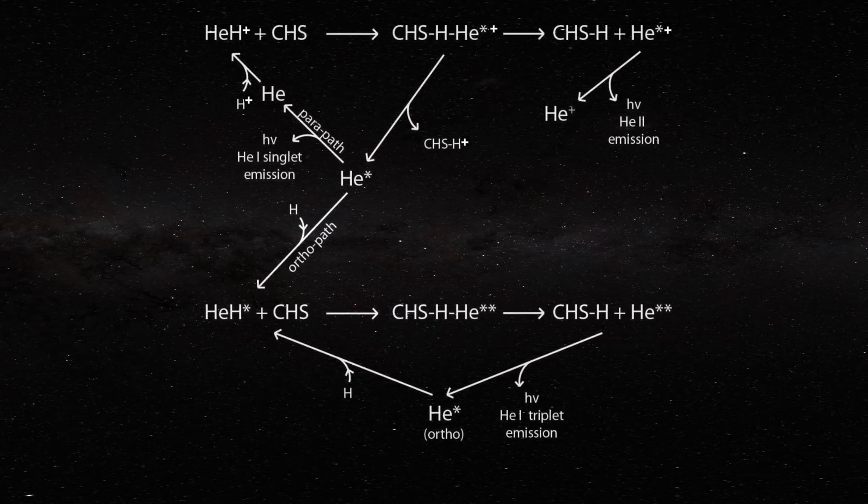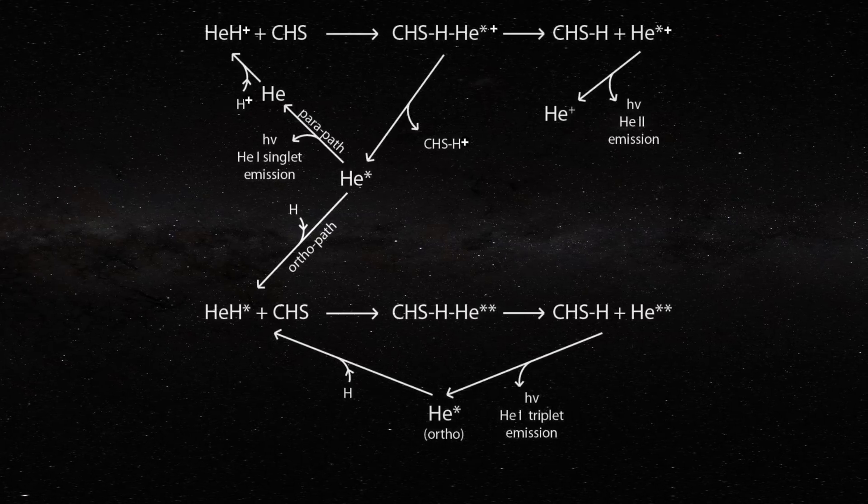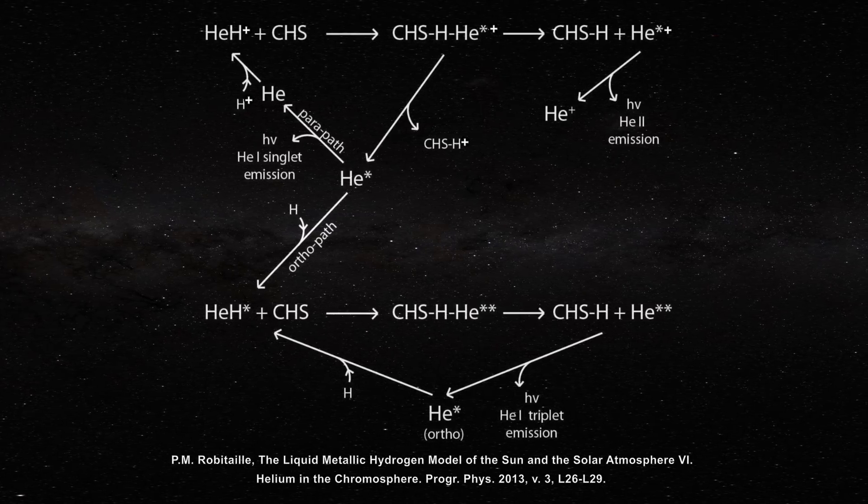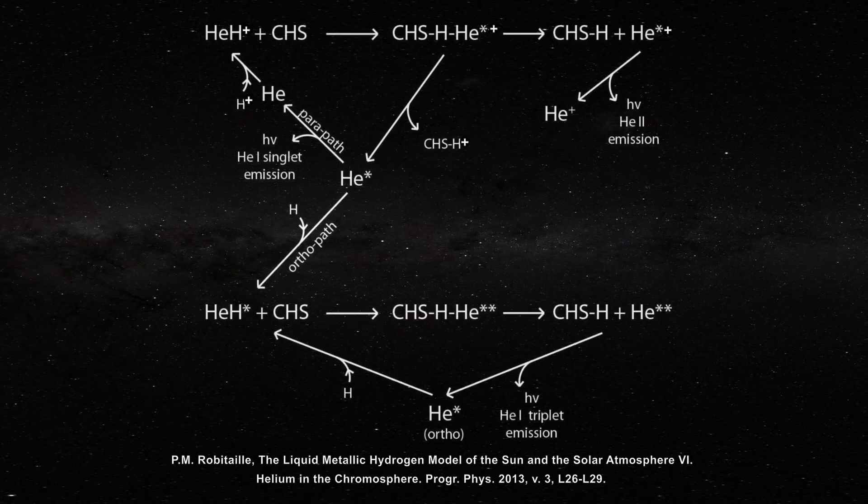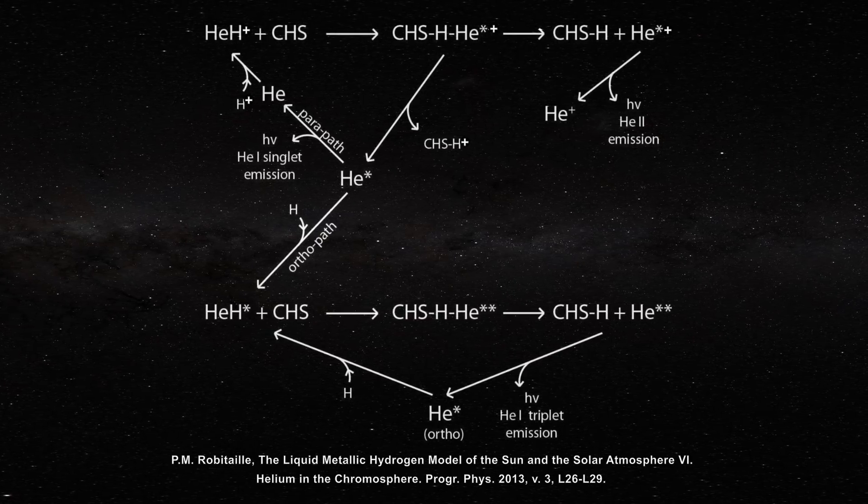The scheme is a little complex for this video, but you are welcome to read the paper. In any case, one thing is clear. Chromospheric helium lines are telling us something important about the sun.